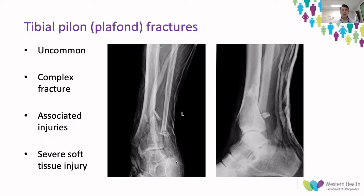These fractures are usually secondary to high-energy mechanisms such as a fall from height or a motor vehicle accident. Because of these high-energy mechanisms, they usually associate with other injuries — something that needs to be considered when assessing a tibial plafond fracture. Associated injuries include open fractures, ipsilateral injuries on the same limb, and even bilateral pylon fractures, as has been reported in the literature.